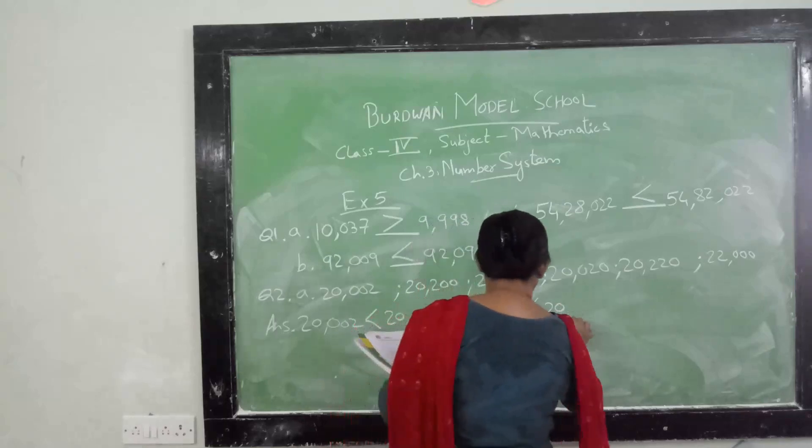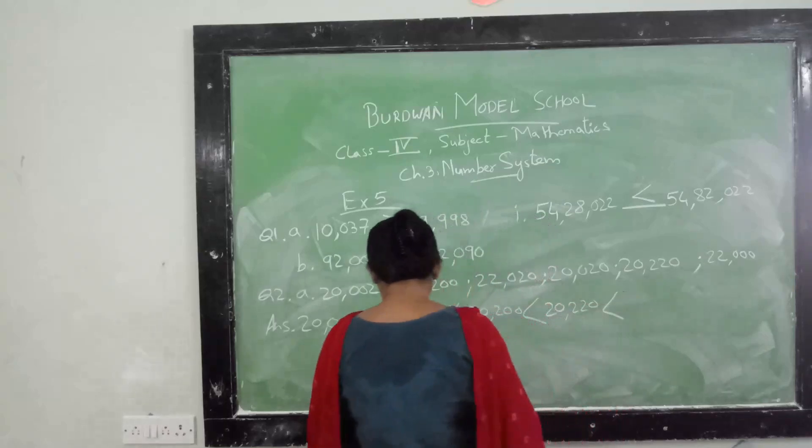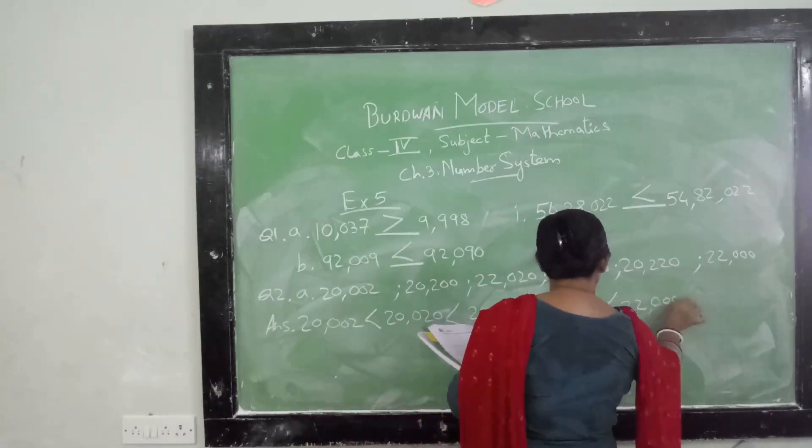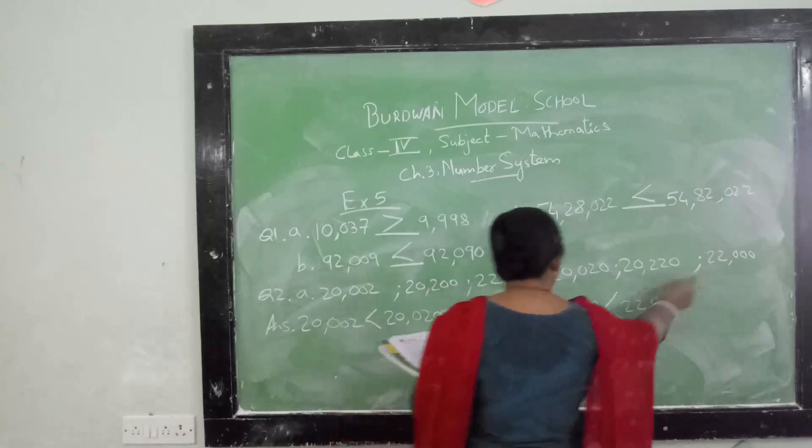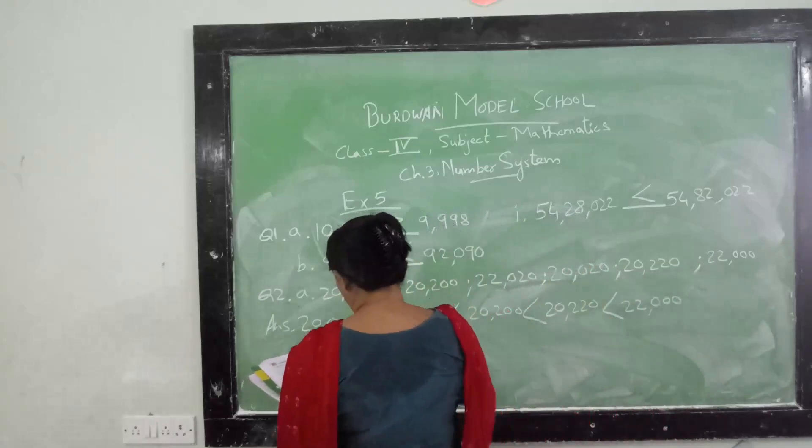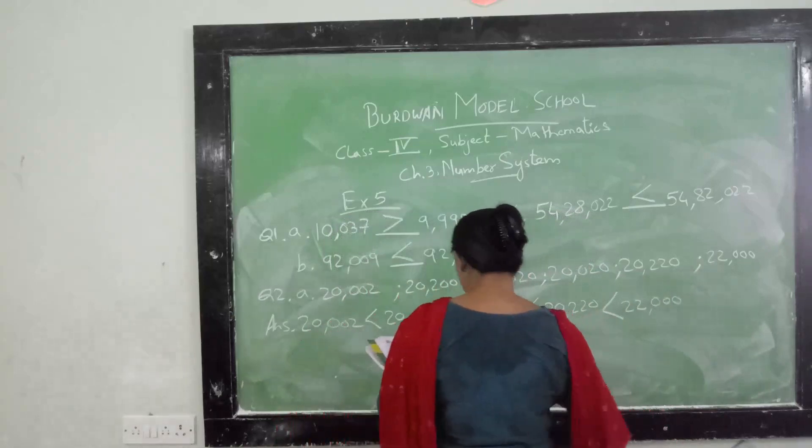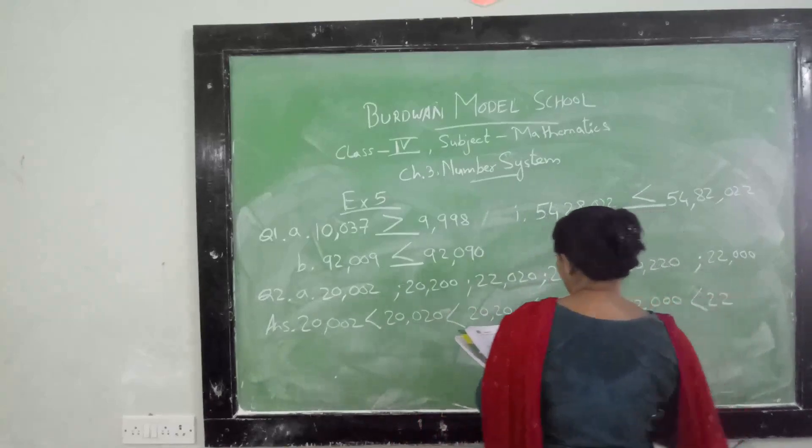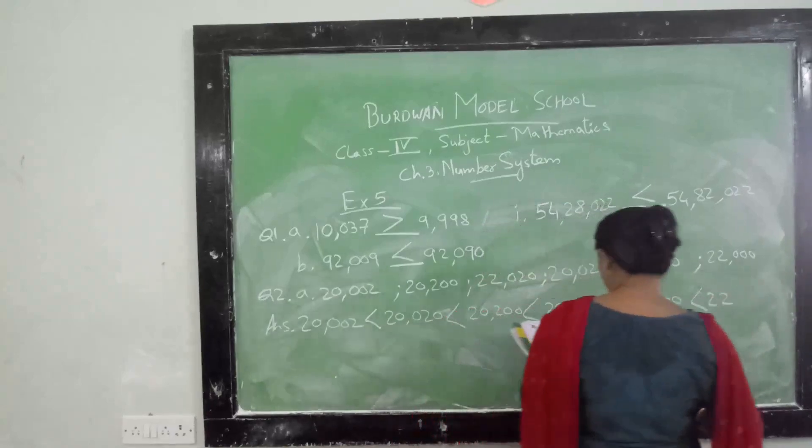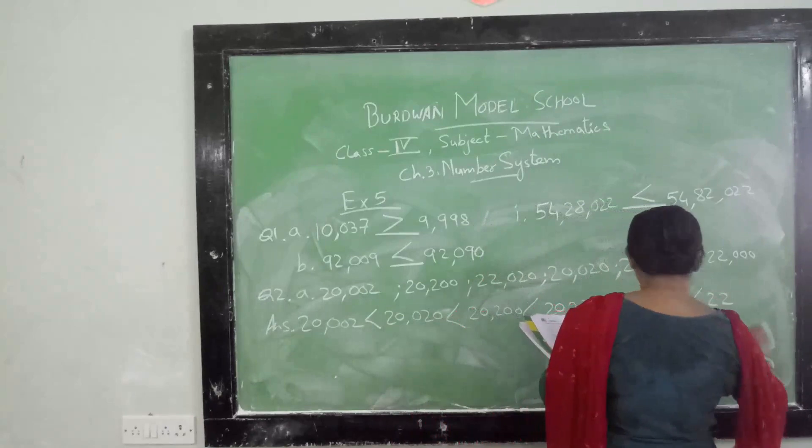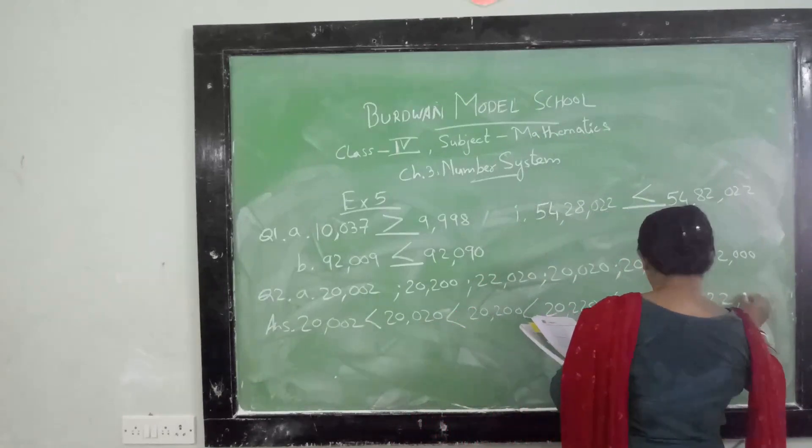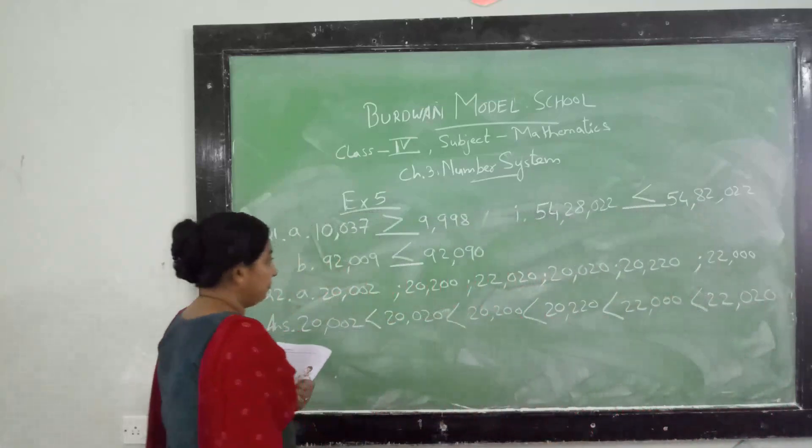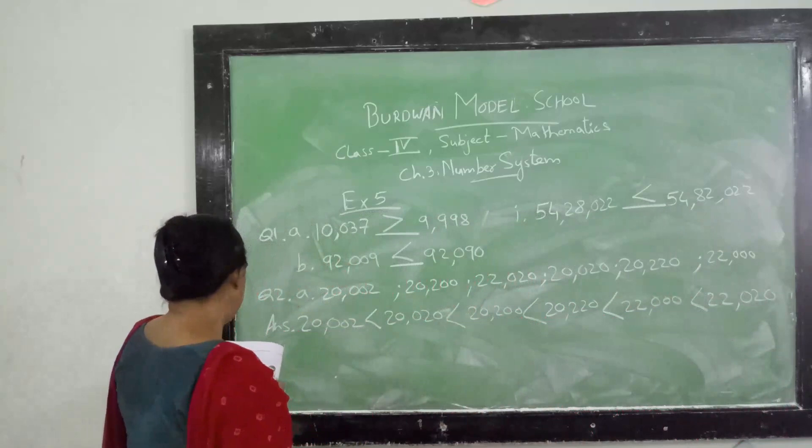Then next is 20,220, again less than 22,000. So this is all about ascending order.